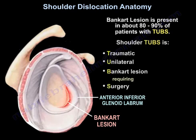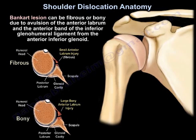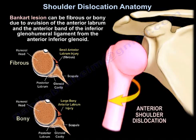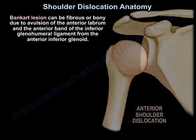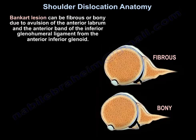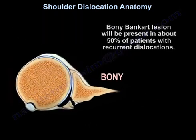TAPS is traumatic unilateral. Bankart lesion requires surgery. Bankart lesion can be fibrous or bony, due to avulsion of the anterior labrum and the anterior band of the inferior glenohumeral ligament from the anterior inferior glenoid.